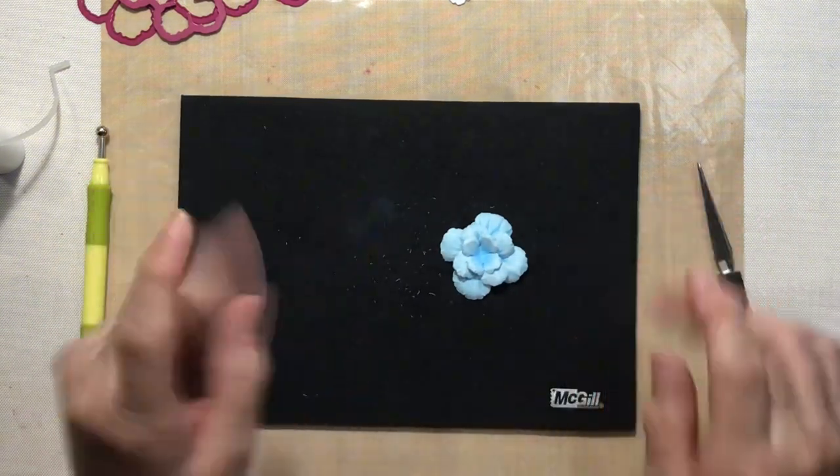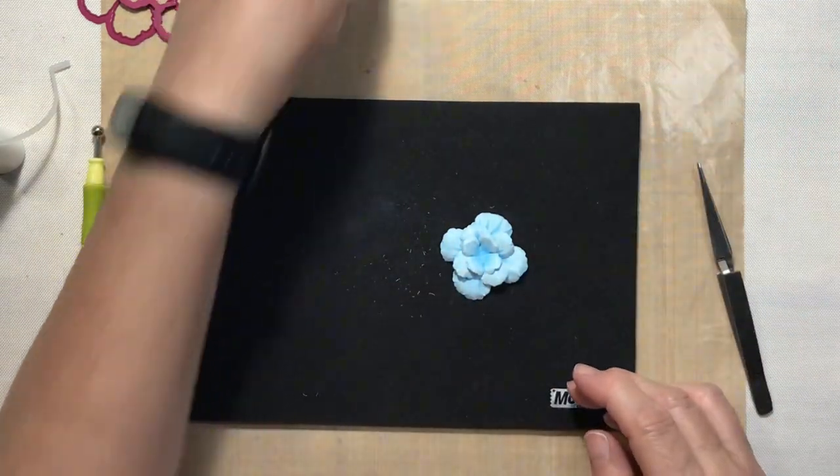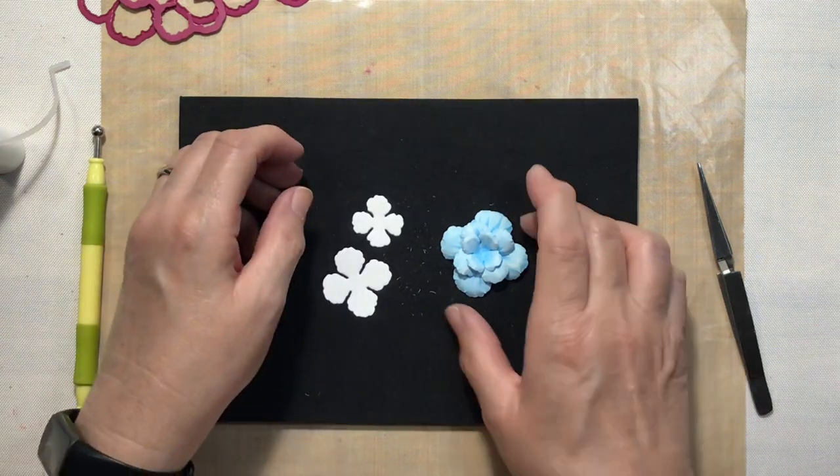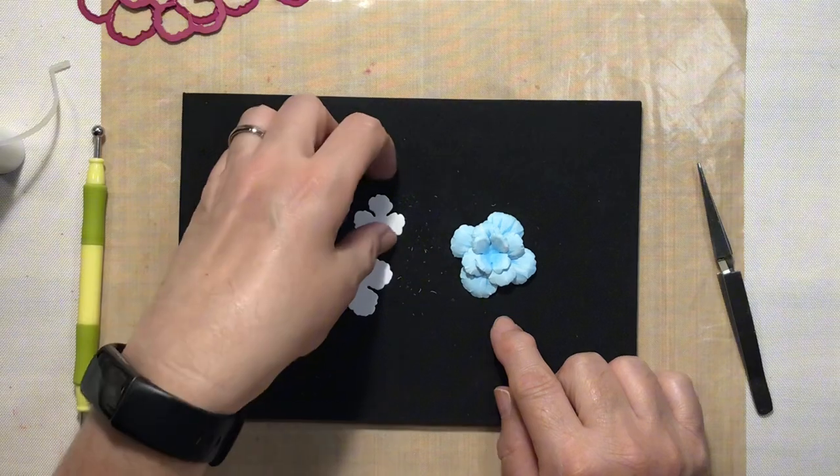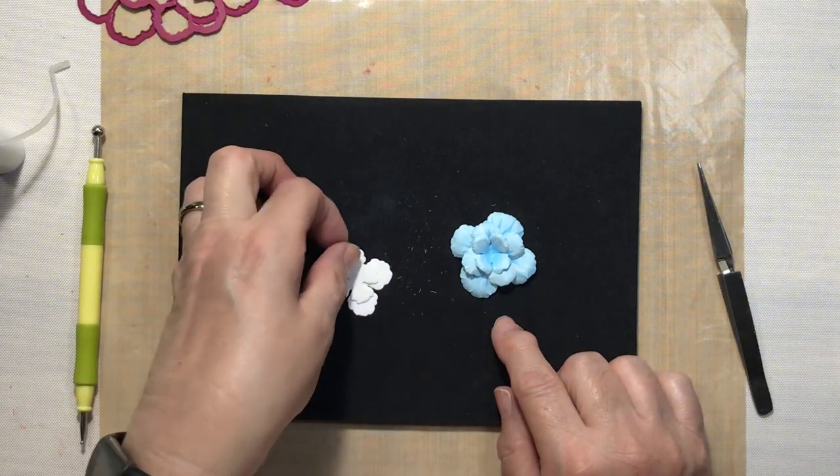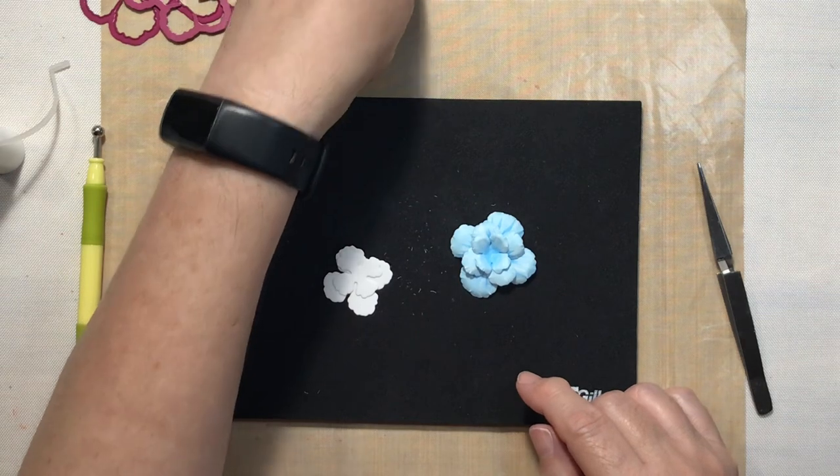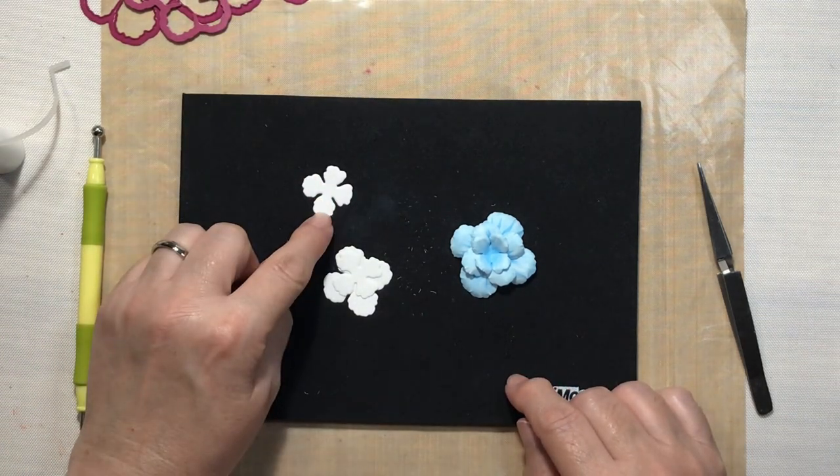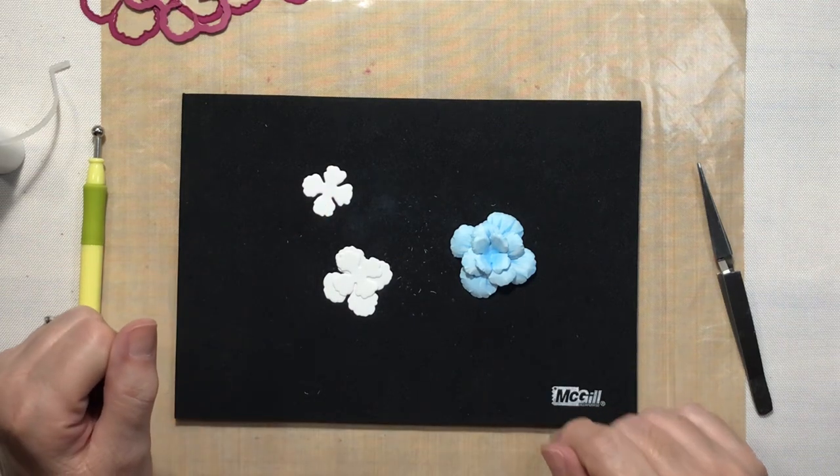I'm going to go ahead and jump off screen and color up the rest of these. For the petal combinations I'm going to have maybe one more of the large, and then I will have a medium and small layer as a flower, and then I will have just a couple of the smallest ones. So I will be back with you shortly.